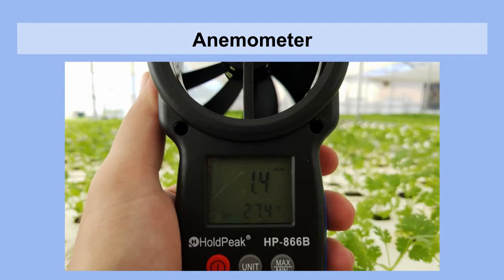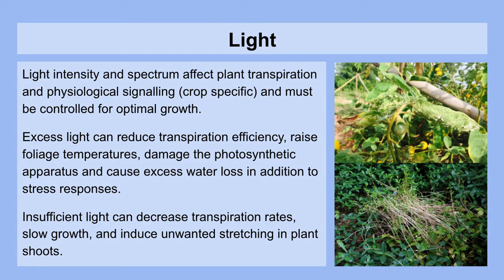Anemometers come in handheld and stationary versions, and they can give you an idea of very localized airflow patterns in the greenhouse so that if you experience any of the situations just mentioned, you can take action and make changes. Light is an interesting and very important environmental parameter, and we're able to control certain aspects of it with greenhouses. Light intensity and spectrum affect plant transpiration and physiological signaling and must be controlled for optimal growth. This is a very crop-specific effect and it's a large subject on its own.